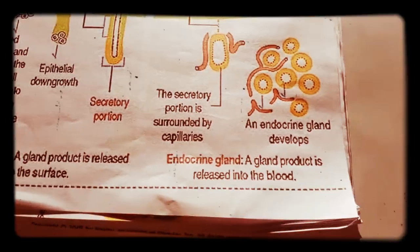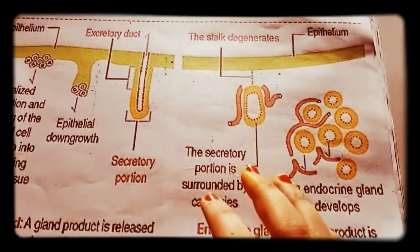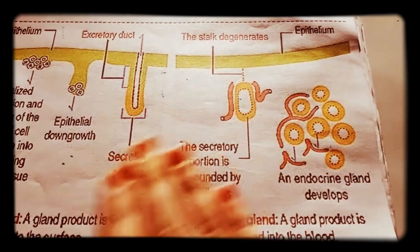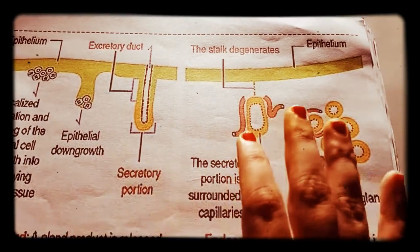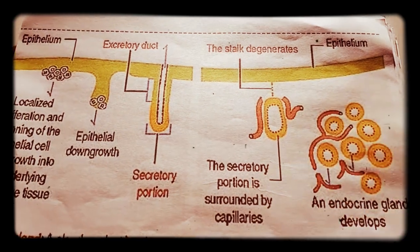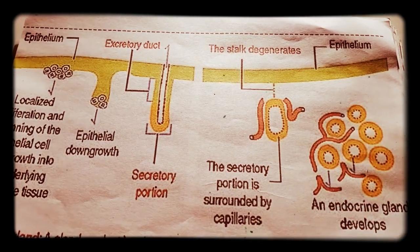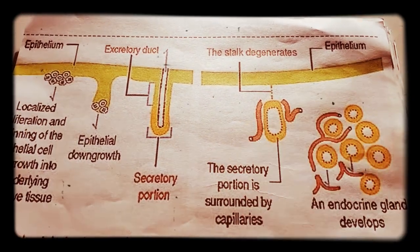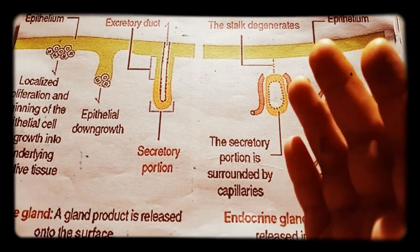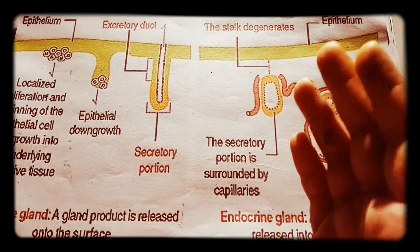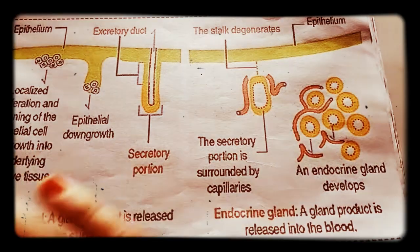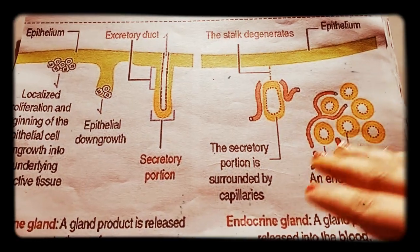Endocrine glands don't have ducts. Examples include the pituitary gland, pancreas, and suprarenal gland. An important feature of endocrine glands is that their secretions are released into the blood and travel to distant target sites.